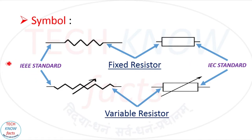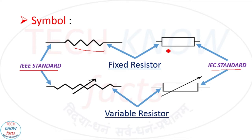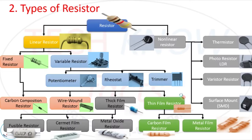Now, the symbol of the resistor. We have two types of symbols: number one is the IEEE standard and number two is the IEC standard. The IEEE standard fixed resistor symbol and the IEC standard fixed resistor symbol are shown, as well as the IEEE standard variable resistor symbol and the IEC standard variable resistor symbol.